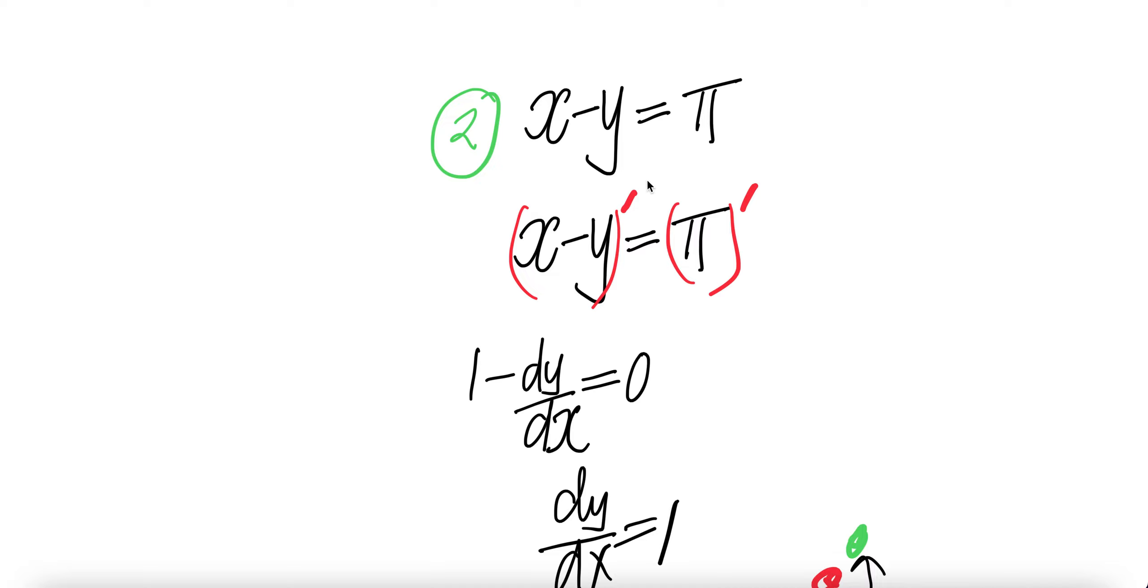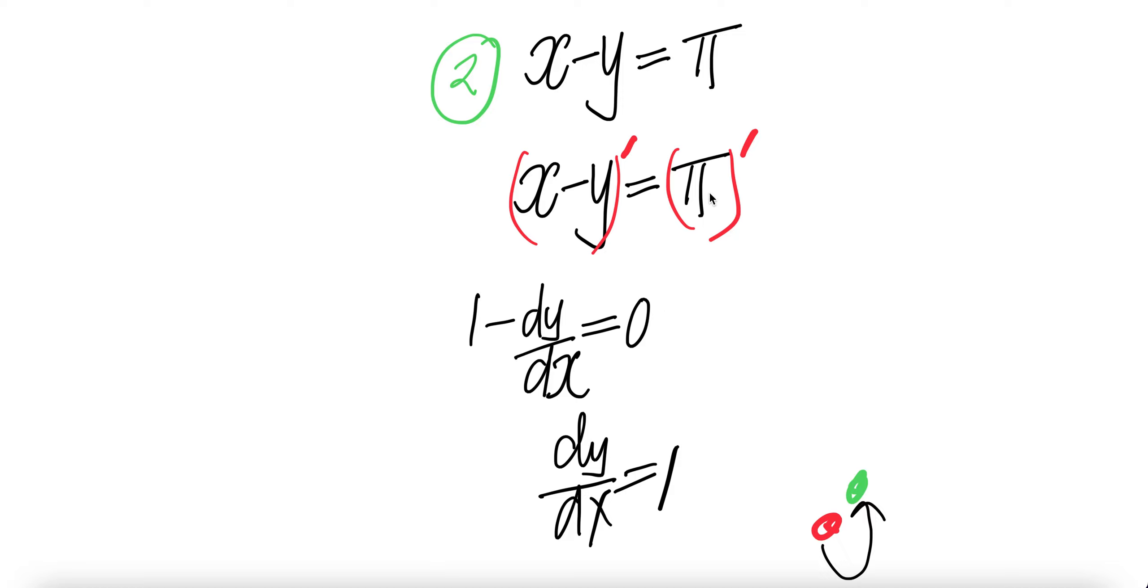Take the derivative, which is the derivative of the left equals the derivative of the right. The derivative of the constant is zero.